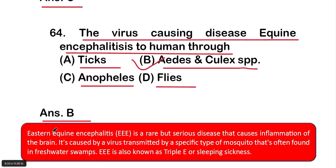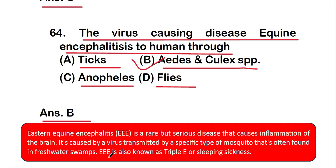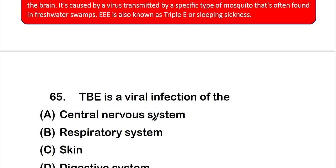Eastern equine encephalitis (EEE or triple-E) is a rare but serious disease that causes inflammation of the brain. It is caused by a virus transmitted by a specific type of mosquito often found in freshwater swamps. Triple-E is also known as sleeping sickness.